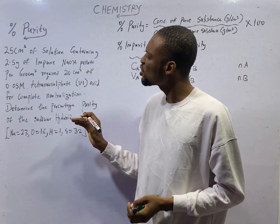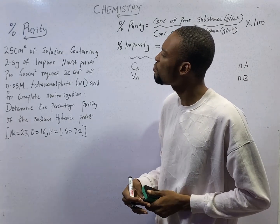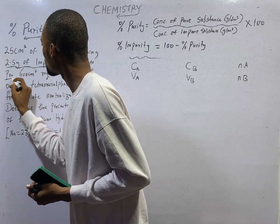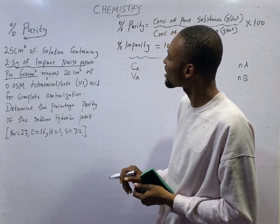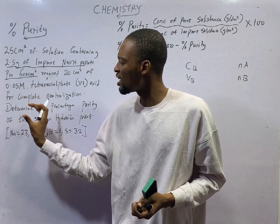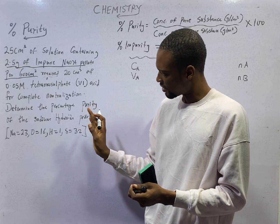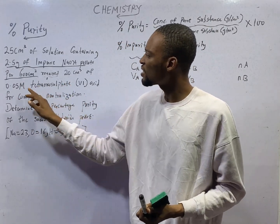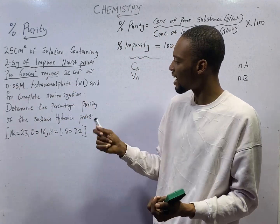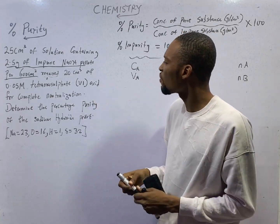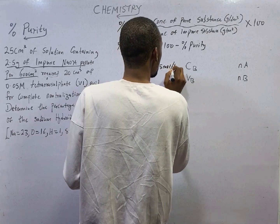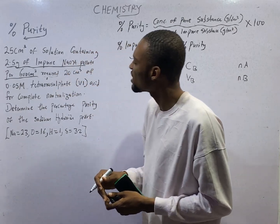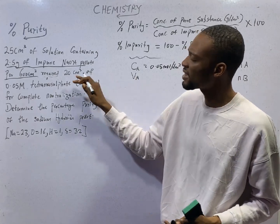Now look at this question. 25 cm³ of a solution containing 2.5 grams of impure sodium hydroxide pellets per 600 cm³ required 20 cm³ of 0.05 M tetraoxosulfate(VI) acid for complete neutralization. 'M' stands for concentration — big M means mol/dm³. So 0.05 M is the concentration of the tetraoxosulfate(VI) acid. Therefore, the concentration of the acid is 0.05 mol/dm³, and the volume of the acid is 20 cm³.